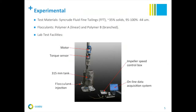The test materials used were Syncrude FFT with about 35% solid content and 95% to 100% minus 44-micron fines. The flocculants tested were Polymer A, which is linear, and Polymer B, which is branched — so we tested two types of polymers.